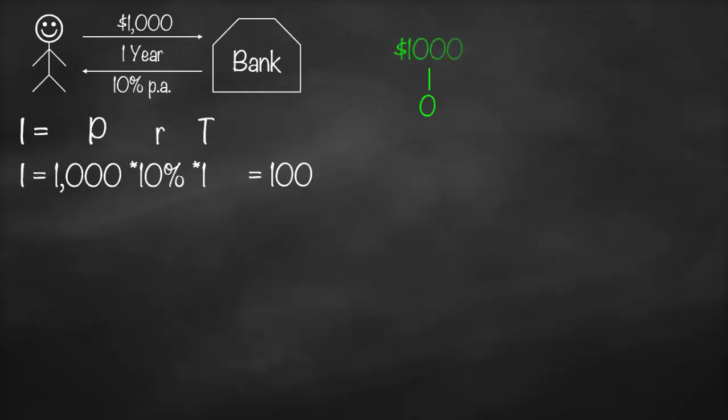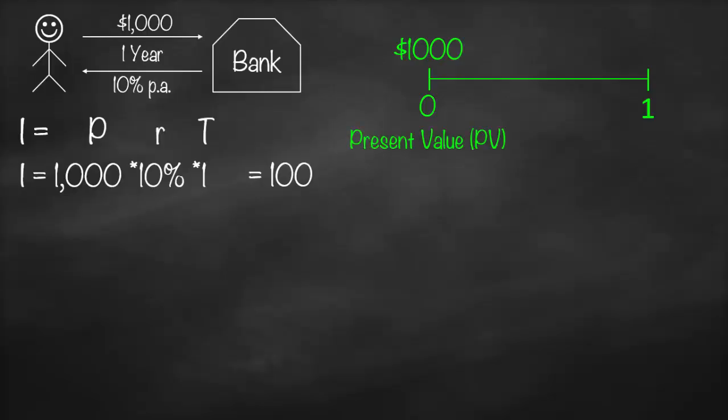So let's draw a timeline. Today at time zero, Mark will deposit a thousand dollars. Time zero — which is now — is called the present value, which we give the symbol PV. We call it present value because this is the value at present, the value at time zero. A synonym for present value is principal, which we give the symbol P.